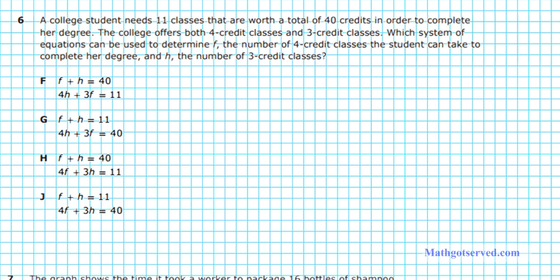Let's take a look at question 6. It says a college student needs 11 classes that are worth a total of 40 credits in order to complete her degree. The college offers both 4-credit classes and 3-credit classes. Which system of equations can be used to determine F, the number of 4-credit classes the student can take to complete her degree, and H, the number of 3-credit classes she can take to complete her degree?